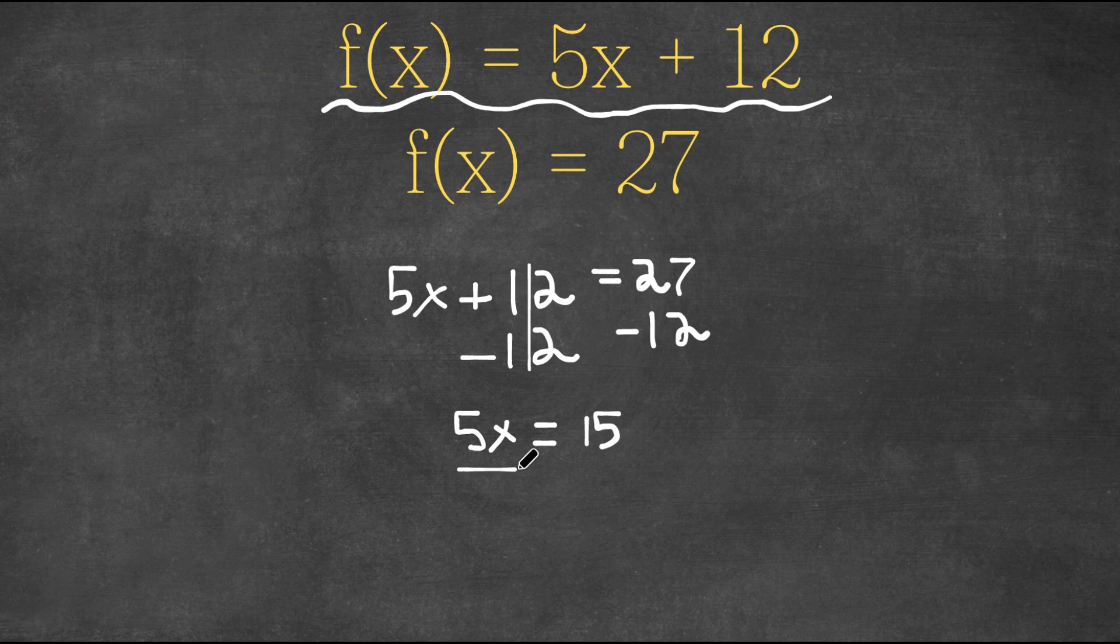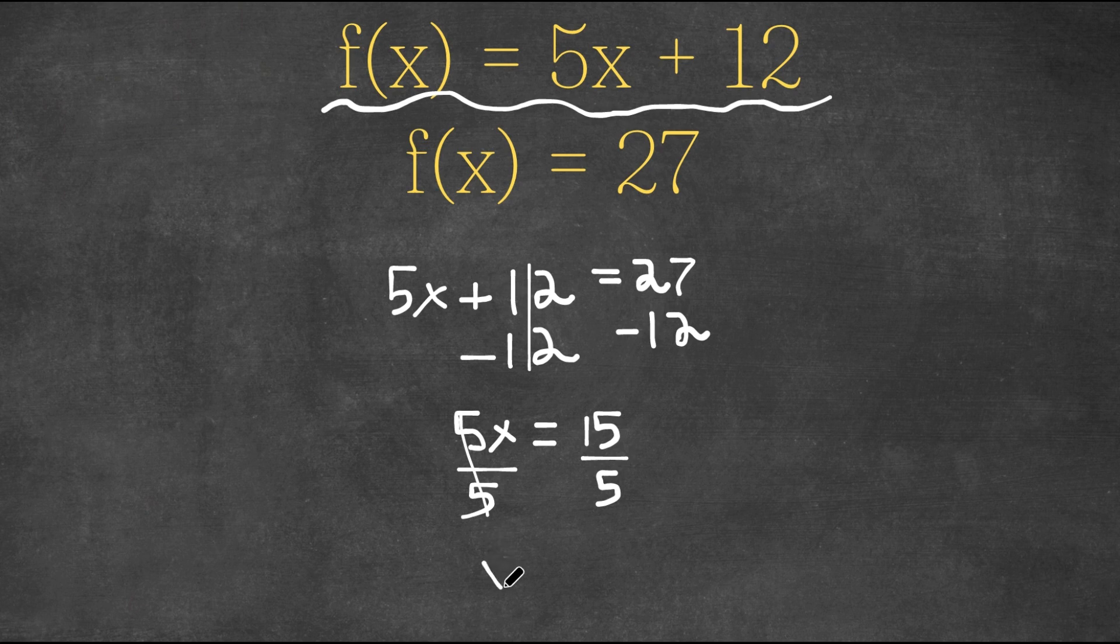Now I'm going to divide by 5 on both sides. These two cancel out and I get x = 3, since 15 divided by 5 is 3.